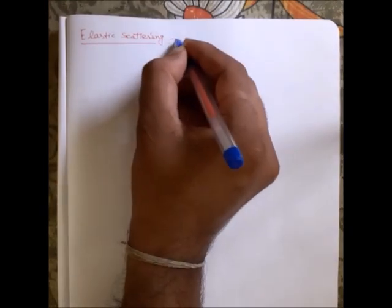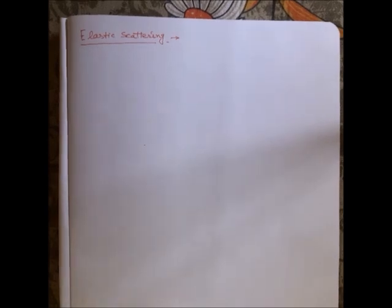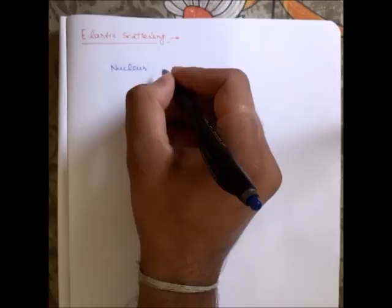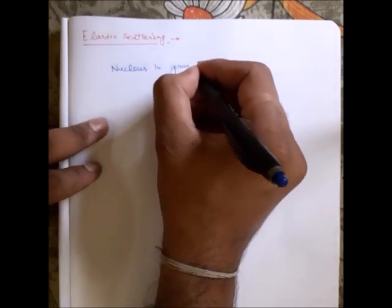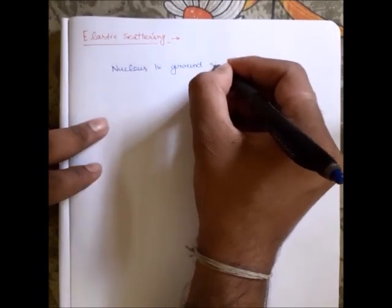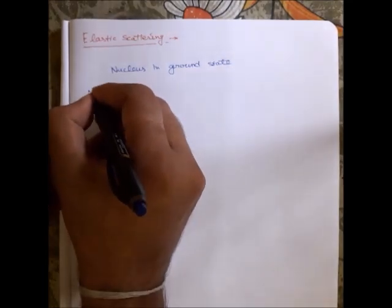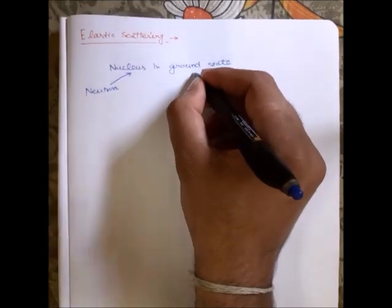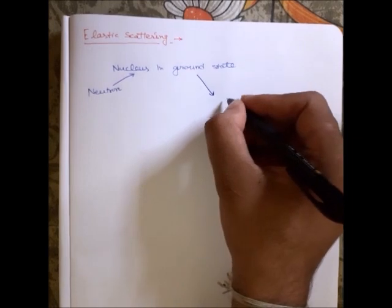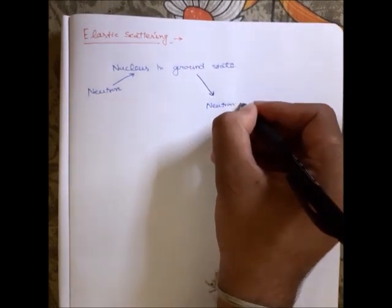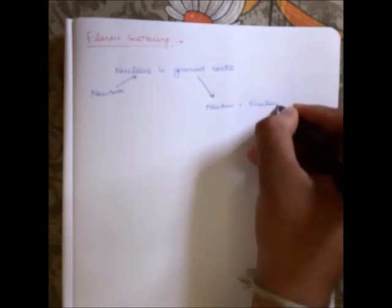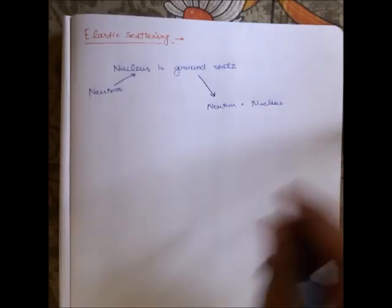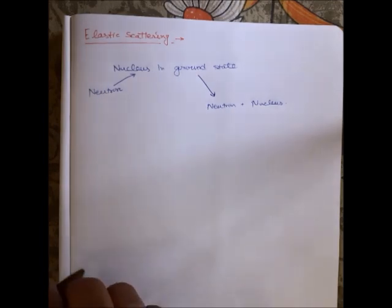In elastic scattering, basically one neutron strikes the nucleus. The nucleus is in the ground state, and one neutron hits the nucleus. After this, the neutron again reappears and the same nucleus is left which is also in the ground state. There is basically no energy or mass transfer in this reaction.